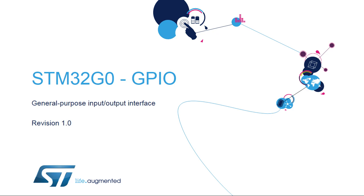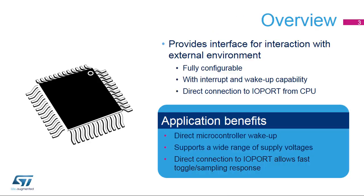Hello and welcome to this presentation of the STM32 General Purpose I/O Interface. It covers the general purpose input and output interface and how it allows connectivity to the environment around the microcontroller. General purpose I/O pins of STM32 microcontrollers provide an interface with the external environment. This configurable interface is used by the MCU and also all other embedded peripherals to interface with both digital and analog signals.